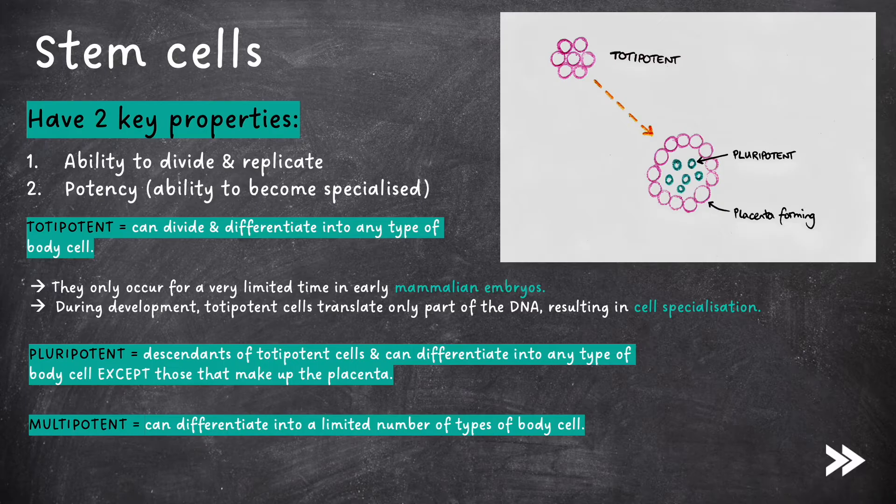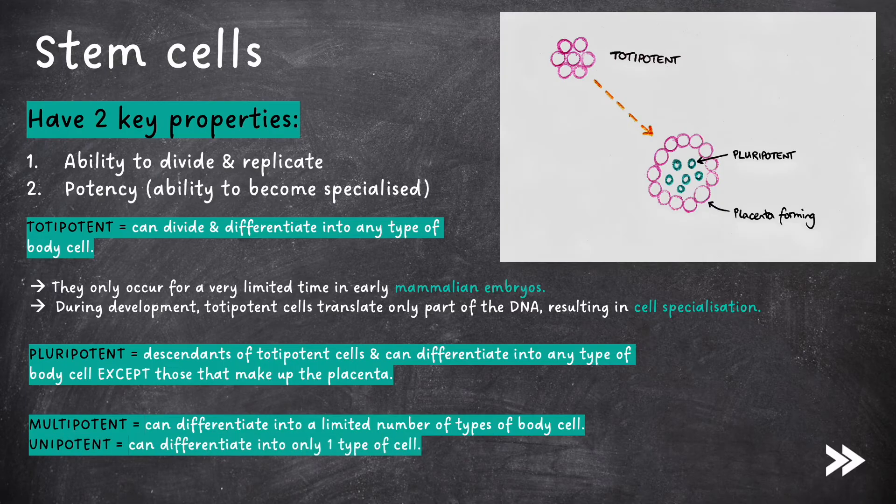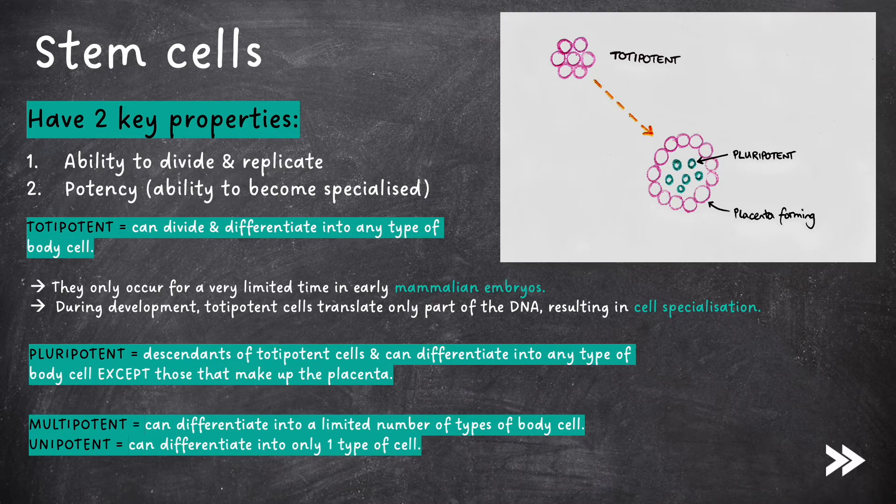And finally, unipotent cells can differentiate into only one type of cell. Note that both multipotent cells and unipotent cells are found in mature mammals.